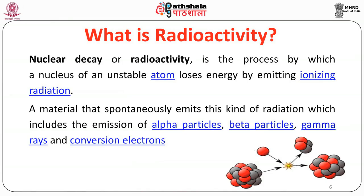We should know what is radioactivity and how it is defined. Nuclear decay or radioactivity is the process by which a nucleus of an unstable atom loses energy by emitting ionizing radiation. A material that spontaneously emits this kind of radiation — which includes the emission of alpha particles, beta particles, gamma rays and conversion electrons — is said to be radioactive.